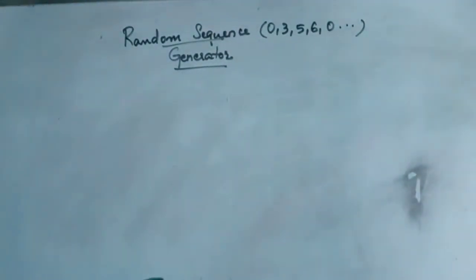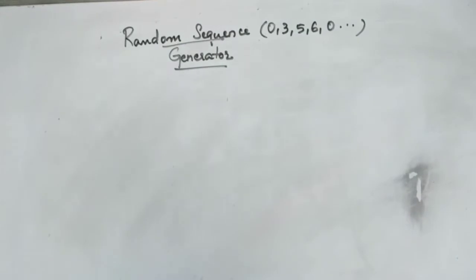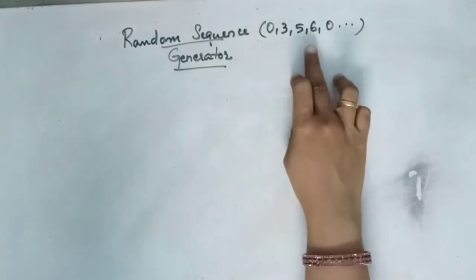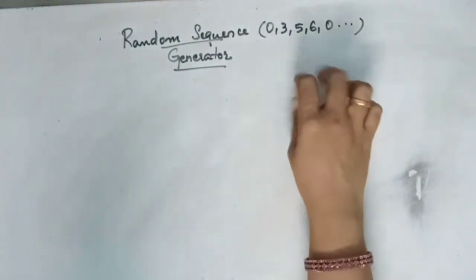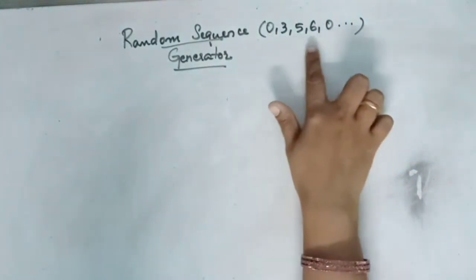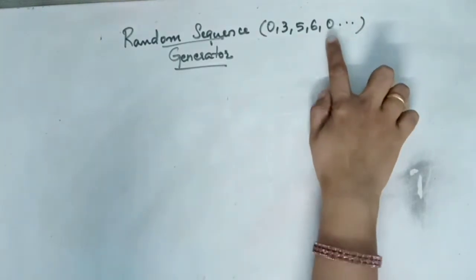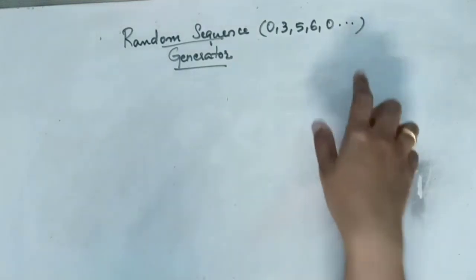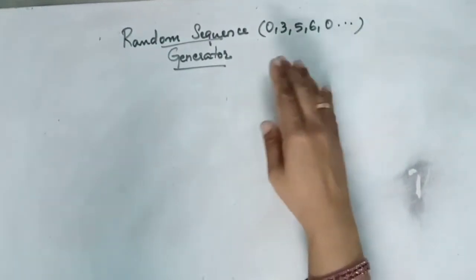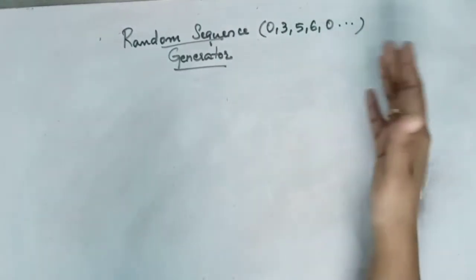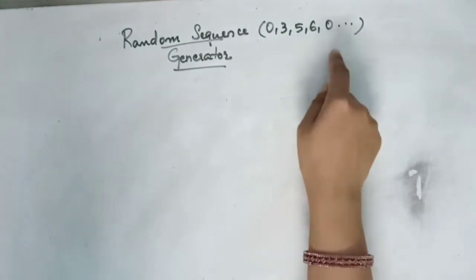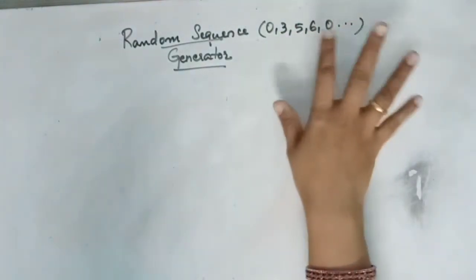Next is a random sequence generator. You'll be given a random sequence, for example 03560. After 6 it is repeating — 03560, 03560 — so 0356 is the random sequence, after that it repeats. It needn't be in ascending or descending order, like an up counter or down counter. It can be in any random sequence, for example 0536.